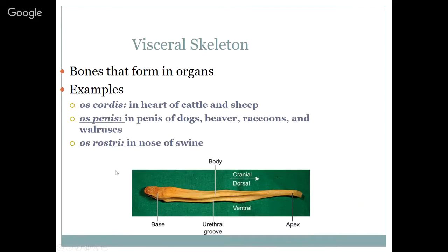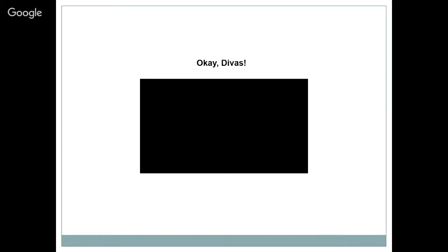The visceral skeleton are bones that form in organs. Not every animal has one, but some examples: the os cordis is found in the heart of cattle and sheep; the os penis is found in the penis of dogs, beavers, raccoons, and walruses; and the os rostri is in the nose of swine, which helps them dig. If you have a male dog, you can actually feel this, and you can see it in x-rays — you just don't want to be concerned when you see it.